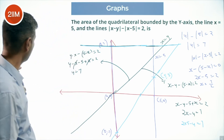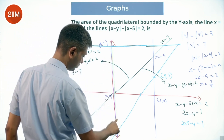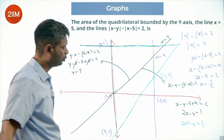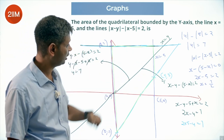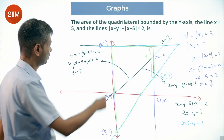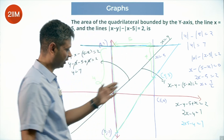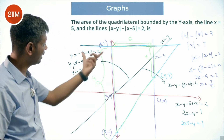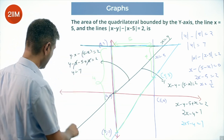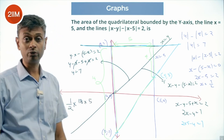We want the area of the quadrilateral bounded by the y-axis, x = 5, and these lines. This is a beautiful trapezium. It has vertices at (0, 7), (0, -7), (5, 3), and (5, 7) — wait, (5, 3) and (5, 7). The parallel sides are: length 14 (from y = -7 to y = 7 on the y-axis) and length 4 (from y = 3 to y = 7 at x = 5). The height is 5. Area = ½ × (14 + 4) × 5 = ½ × 18 × 5 = 45 square units.